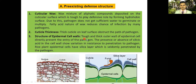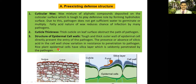The structure of the epidermis cell wall is already thick in nature and also has a deposition of silica. The tough and thick outer wall of the epidermis cell directly prevents entry of the pathogen. The presence or absence of silicic acid in the cell wall shows variation in resistance to penetration by the pathogen. Rice plant epidermis cells have a silica layer which is seldomly penetrated by the pathogen, and due to this cuticle layer pathogen entry is restricted.